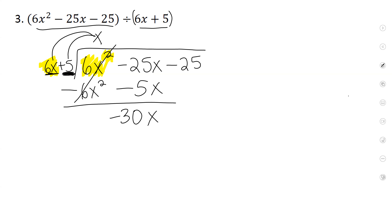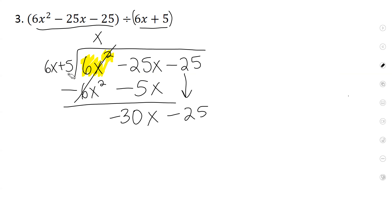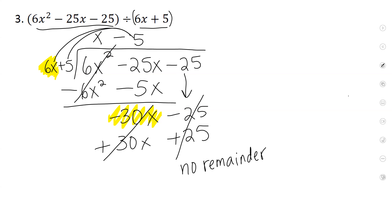Bring down the next thing. 6x times what will give you negative 30x? Negative 5. 6x times negative 5 is negative 30x. The next thing: 5 times negative 5 is negative 25. What do we do? Change the signs. So this will become positive, and this will become positive. Negative 30 and 30 cancel out. Negative 25 and 25 cancel out. So there's no remainder here. Your answer is just x minus 5.